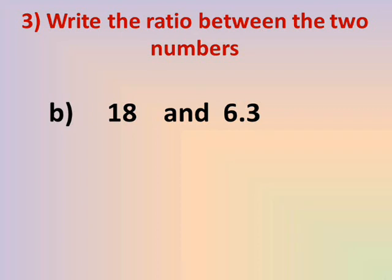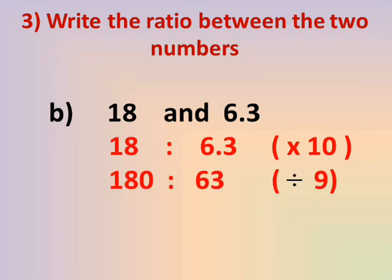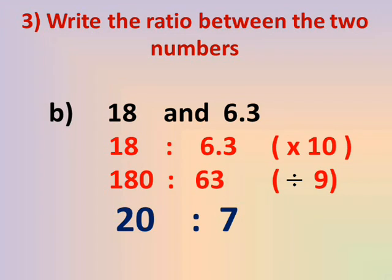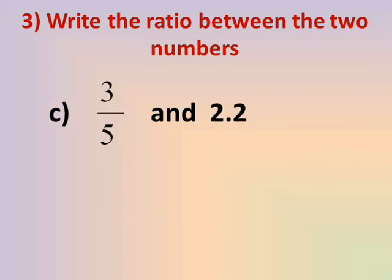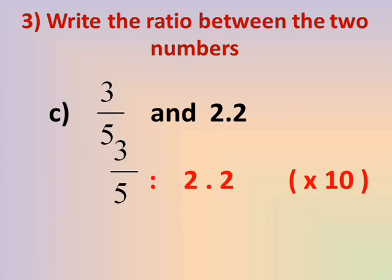Number B: 18 and 6.3. We have a decimal, so first we convert from decimal to whole number by multiplying. There is 1 decimal place, so we multiply by 10. 18 × 10 = 180 and 6.3 × 10 = 63. Both 180 and 63 are divisible by 9: 180 ÷ 9 = 20 and 63 ÷ 9 = 7. The ratio is 20 to 7.